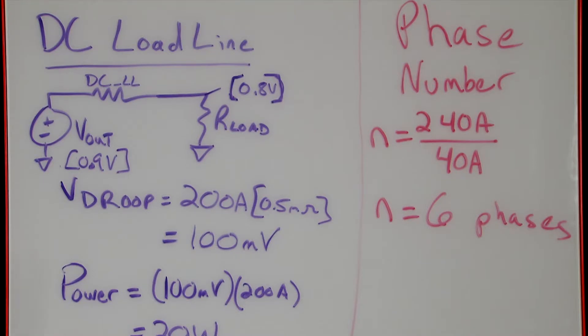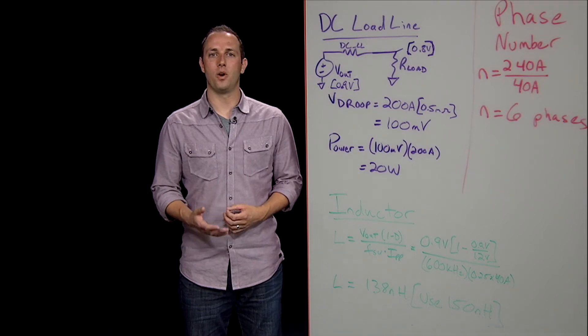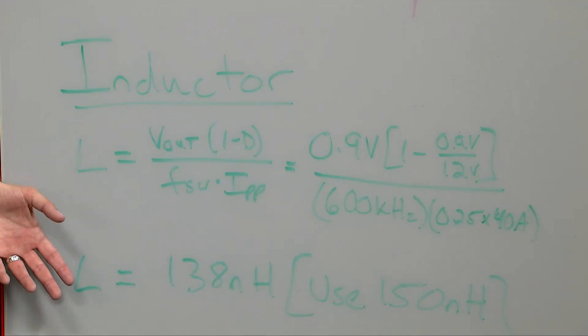We can start our design by quickly determining the number of phases we need. With 240 amps as the max current, keeping individual phase currents no higher than 40 amps requires six phases. Now that we have our phase count, we can then go ahead and pick an inductor value. This is done using the same equation you would normally use for a single phase design, but just be sure to use the max phase current and not the total design current. I'm also going to go with a 600 kHz switching frequency with this design to sit in that middle ground between high efficiency and better transient response. For a rippled current target, we'll use 25%. Plugging in the numbers, this gives us an inductance of 138 nH, so we'll go ahead and use a 150 nH choke since it's the closest common value.